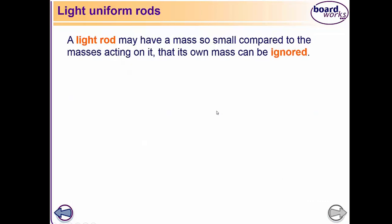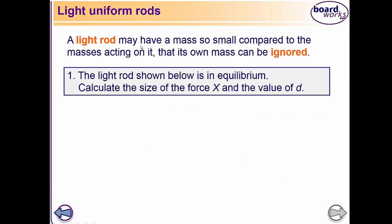Light uniform rod: a light rod may have a mass so small compared to the masses acting on it. If a rod is very light, then we will ignore its mass. The light rod's mass will be very small compared to those masses which are hung on it, so we will ignore the light rod's weight.